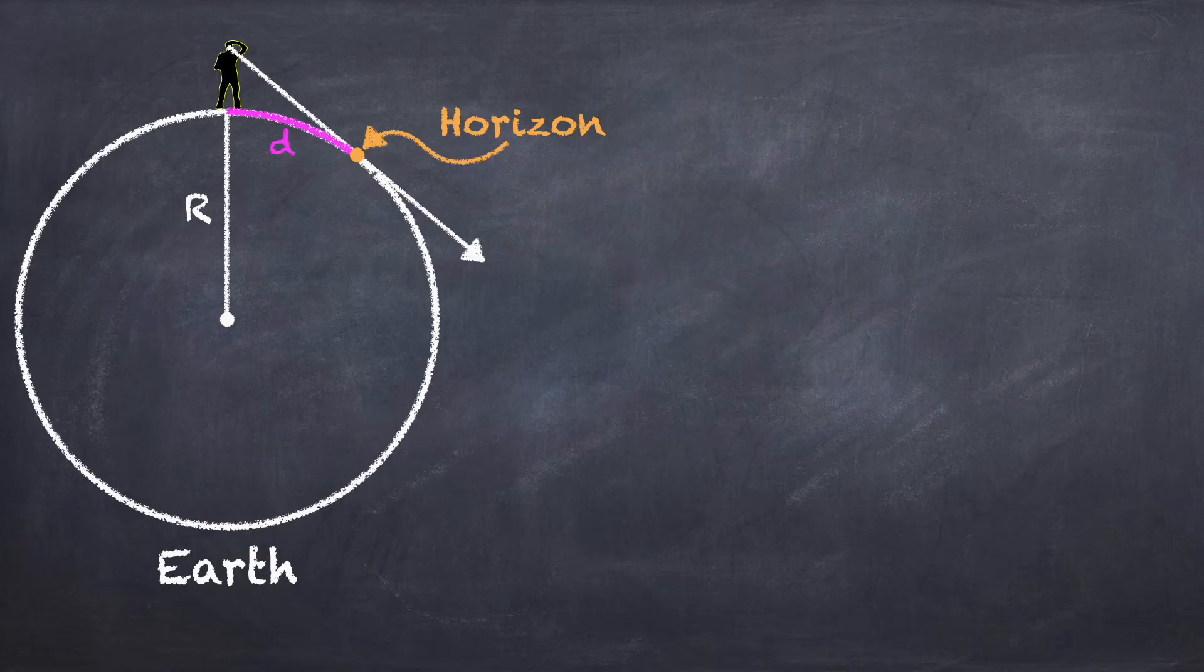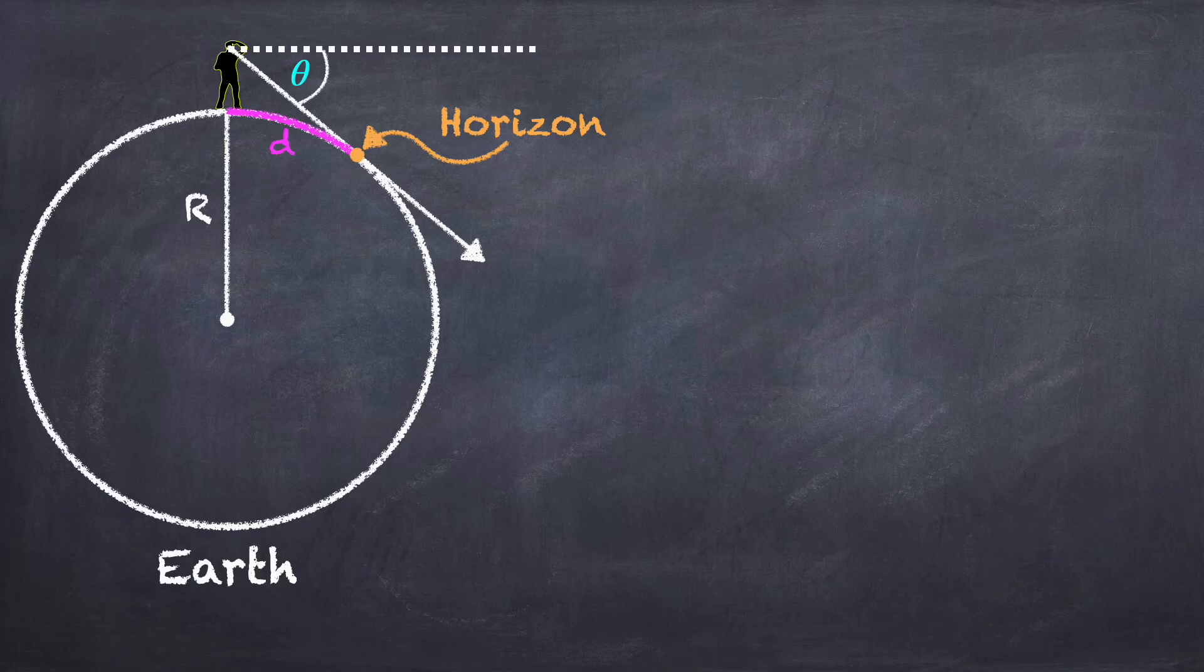Now when you're looking at the horizon, it feels like you're looking straight out. But actually, you're slightly looking down by an angle, which I'm going to call theta. In this diagram, this angle is grossly exaggerated because the person I've drawn is enormous. But in reality, this angle theta is very small.